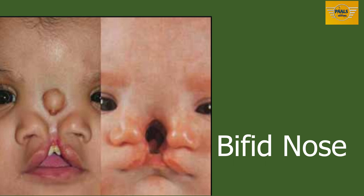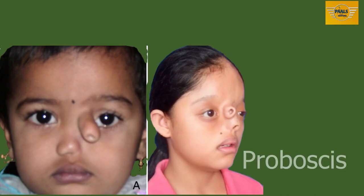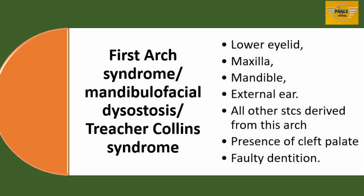Bifid nose is a condition where the nose is separated at the midline, due to bifurcation of the frontonasal process, and is usually associated with median cleft lip. Another anomaly is proboscis, a congenital tubular nose seen coming out from just below the forehead. We also have a condition where the entire first arch may remain underdeveloped on one or both sides, affecting the lower eyelid, the maxilla, the mandible, and the external ear — all structures formed from the first arch. This condition is called mandibulofacial dysostosis, or first arch syndrome, or Treacher Collins syndrome.